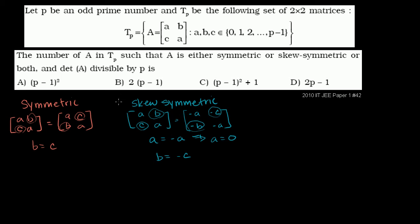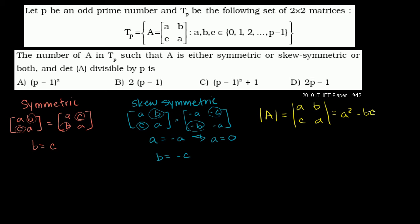We want to find the number of members of the set where either of these conditions is true and the determinant is divisible by P. The determinant of matrix [[a,b],[c,a]] equals A times A minus B times C, which is A squared minus BC.